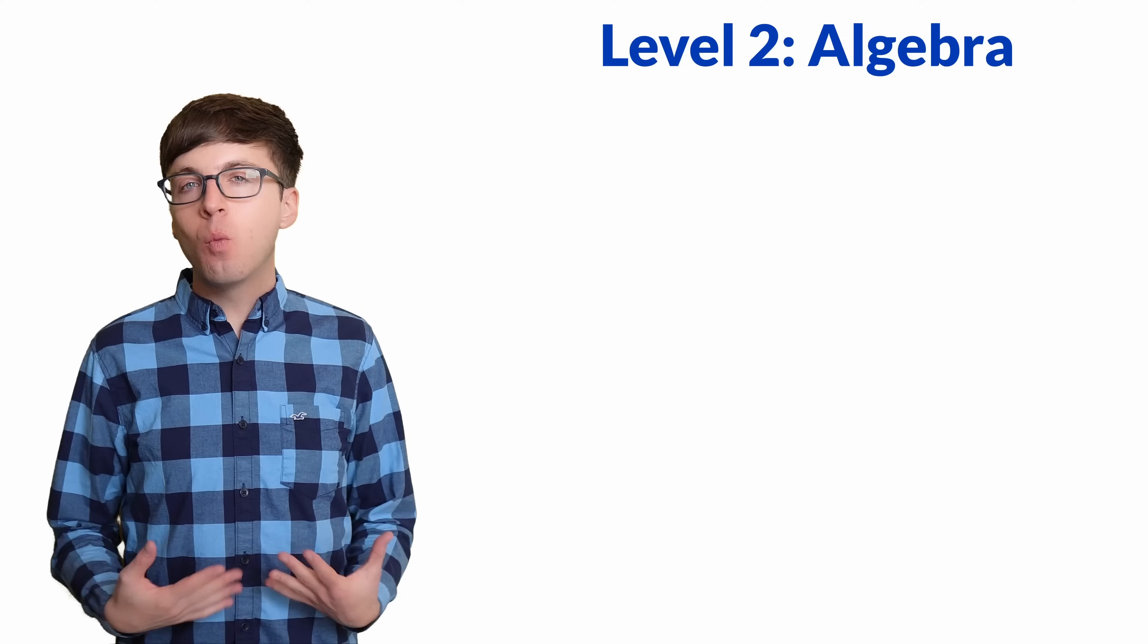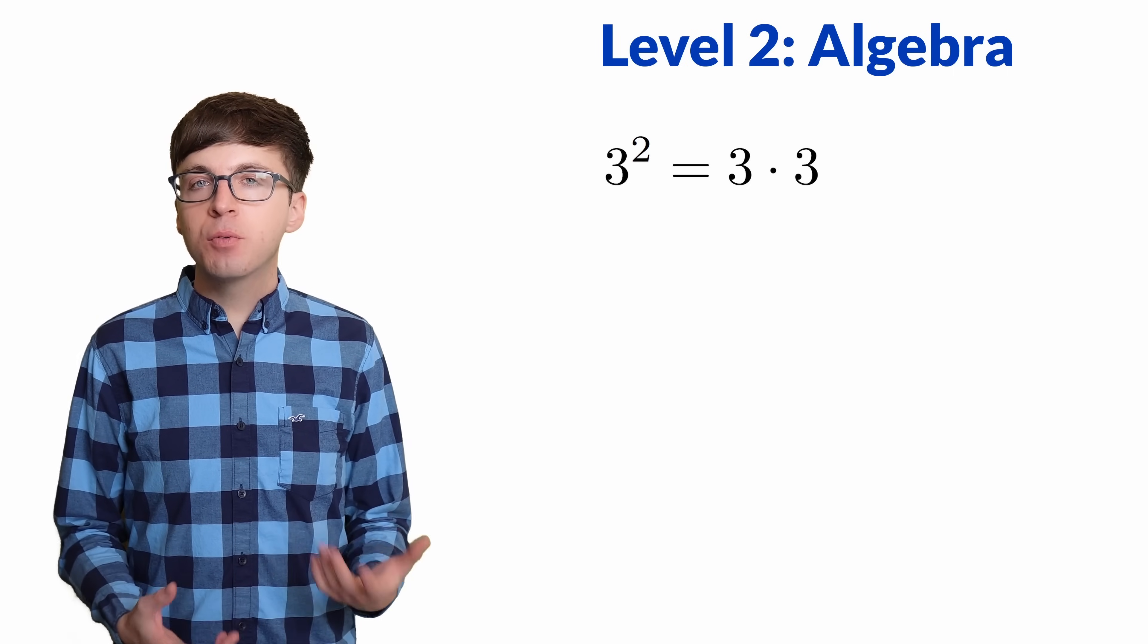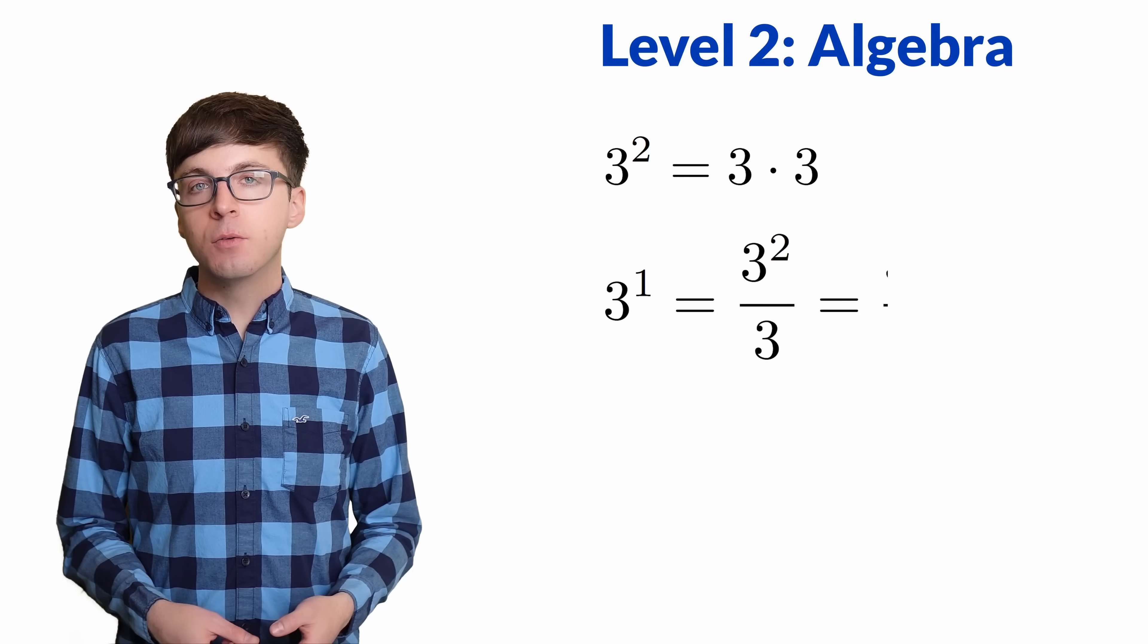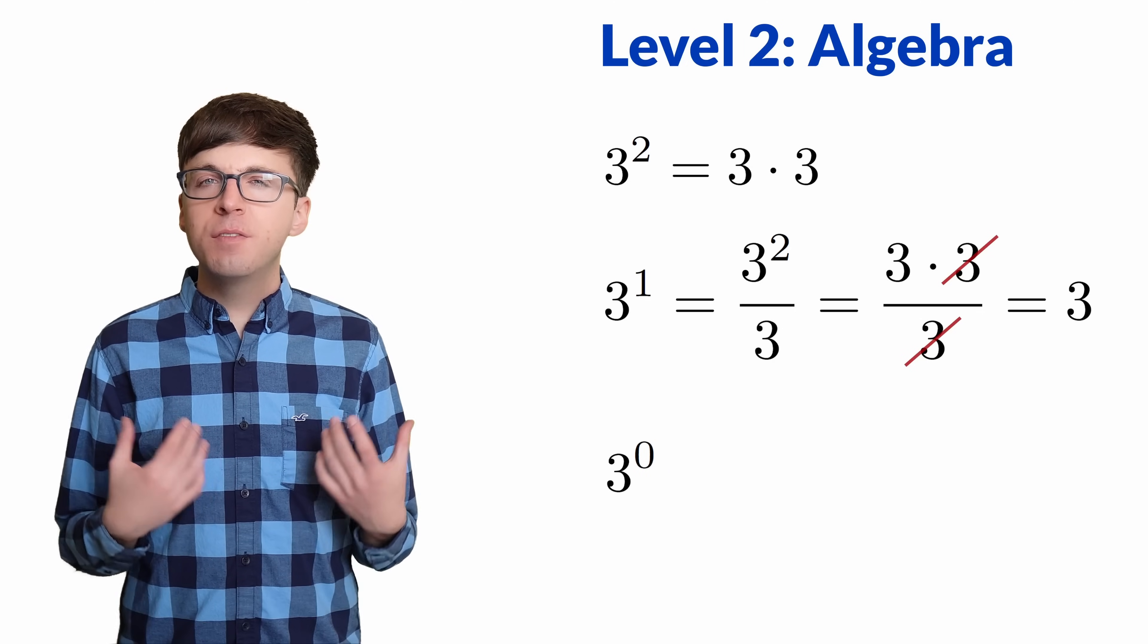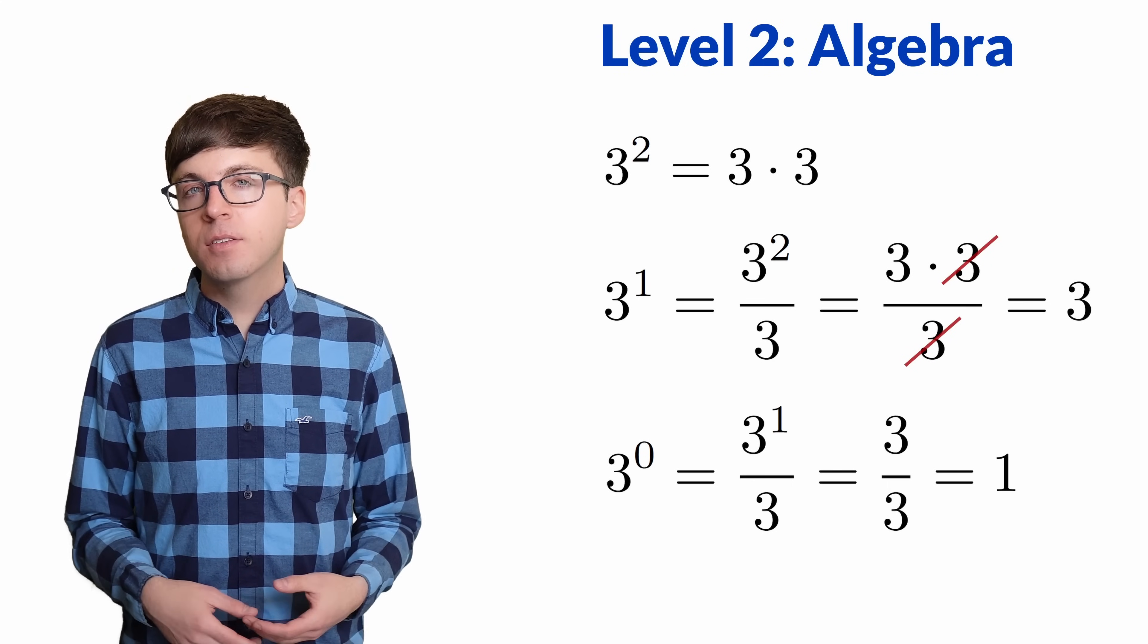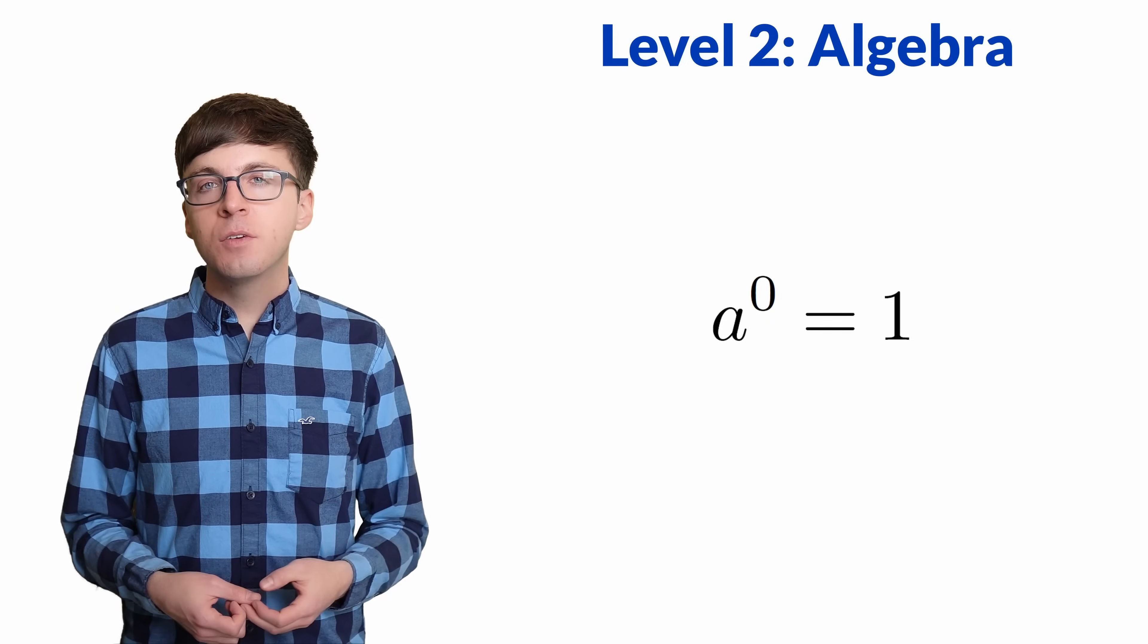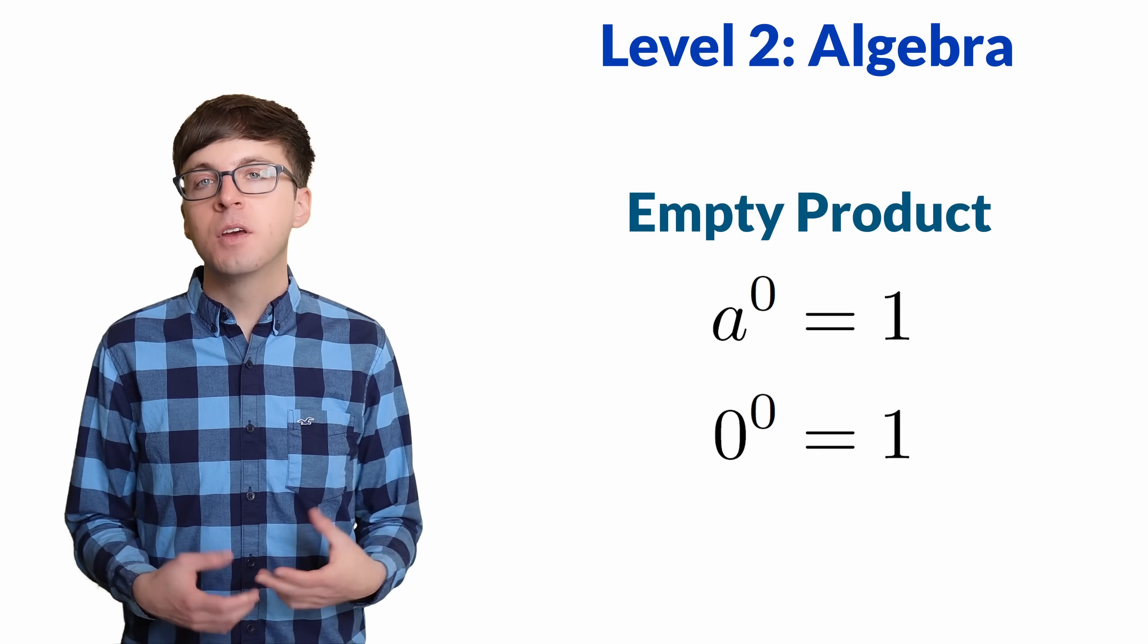For level two, let's think about what exponents mean. When we write 3 to the power 2, we mean to multiply 3 times 3. We have a product made up of two factors of 3. To get 3 to the power 1, we need to remove one of those 3s. We can divide by 3 to do this. We're left with a product of a single factor of 3. To get 3 to the power 0, we divide by 3 again and are left with 1. Another way to say this is that an empty product, a product with no factors, is equal to 1. This is because 1 is the multiplicative identity. So we can interpret a to the 0 as the empty product, which is 1, and 0 to the 0 can also be interpreted as an empty product, which is 1.